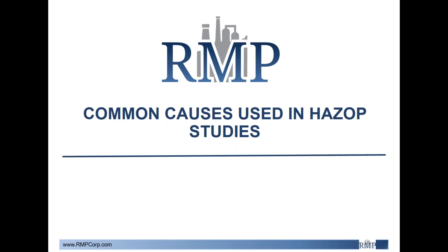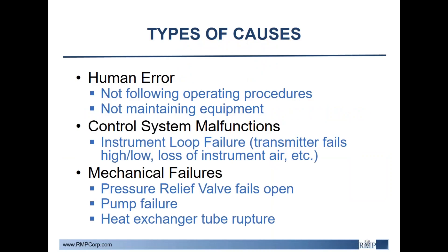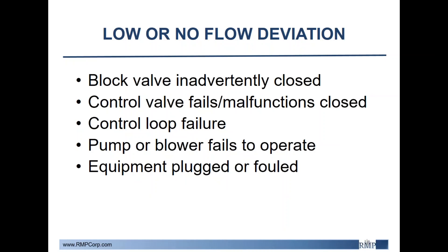Now I'll begin discussing the common causes in HAZOP studies. There are several types of causes to look out for. One would be human error, such as not following operating procedures — for example, an operator inadvertently opening a valve or not maintaining equipment and allowing things to foul. Another type is control system malfunctions, like instrument loop failure, which could be transmitter failure or loss of instrument air. And finally, mechanical failures are also very commonly seen, such as pressure relief valves failing open, pumps failing to operate, or heat exchanger tube ruptures.